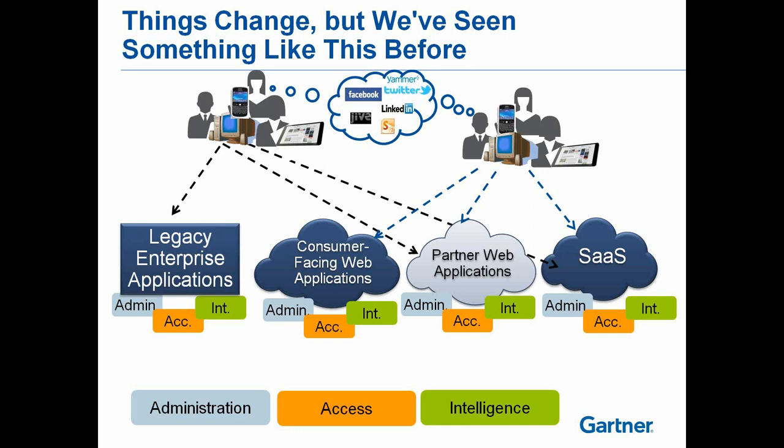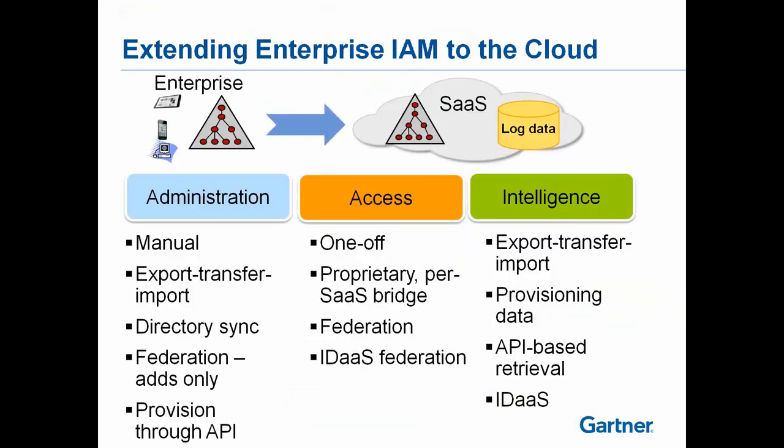We can't forget that any time we talk about managing identity, we're talking about the core administration functions: managing identities — the digital data about ourselves and our partners and constituents — and the entitlements that have to be managed, who has access to what. Also the access functions of authentication and authorization, the real-time verification of identity, and monitoring and reporting functions, all still needed whether applications are on-premises or in the cloud, and whether you're accessing them from traditional desktops or mobile devices.